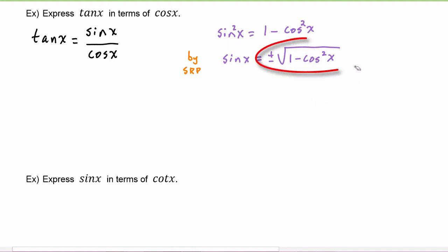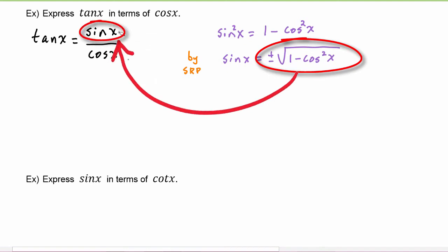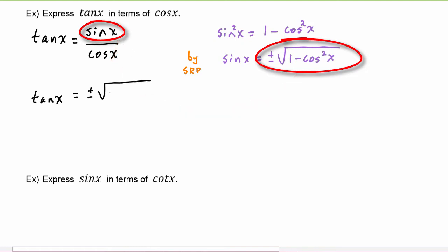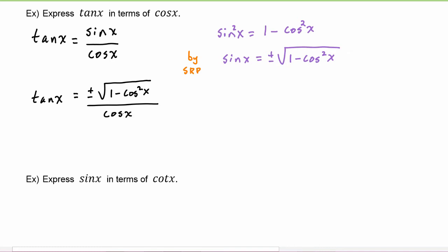We can take this expression and substitute it in for sine of x, and get that tangent of x is equal to plus or minus the square root of one minus cosine squared of x, divided by cosine of x. So here we have expressed tangent of x in terms of cosine of x.